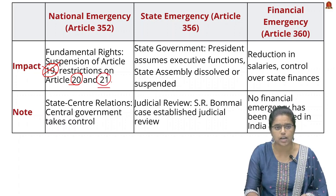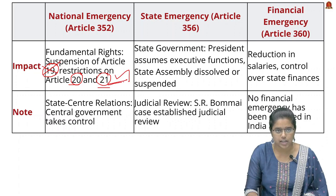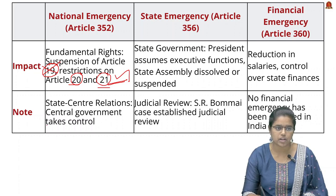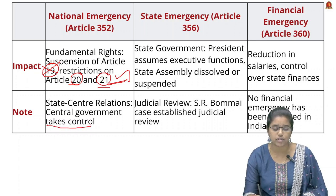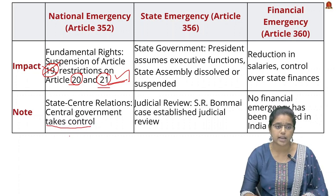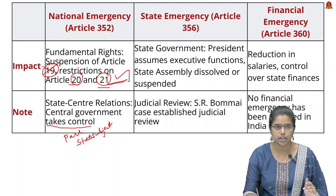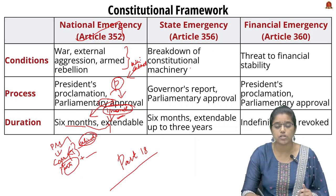During the period of National Emergency, Articles 20 and 21 cannot be suspended. Additionally, the central government will take control of the state government, and Parliament can legislate laws on state subjects as well. These are the important points to remember regarding the National Emergency.